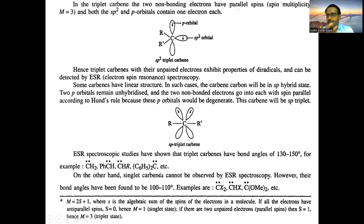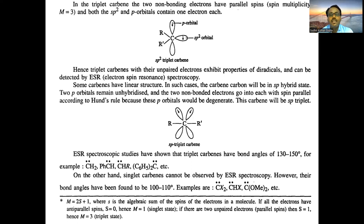On the other hand, singlet carbenes cannot be detected by ESR spectroscopy. To be detected by ESR, a species must be paramagnetic. When both non-bonding electrons have opposite spin, they are diamagnetic, so singlet carbenes cannot be observed by ESR spectroscopy. However, their bond angles have been found to be 100° to 110°.